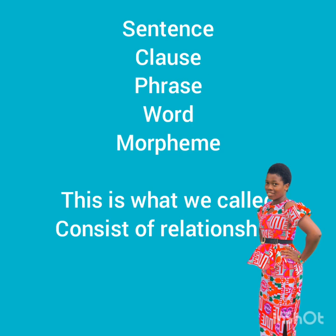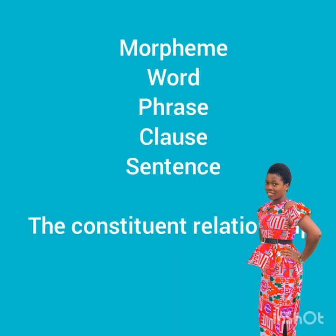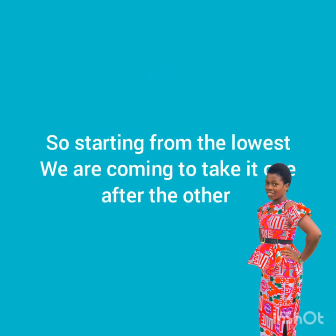These are what we call the grammatical units, starting from sentence, clause, phrase, word, and morphemes. This is what we call the constituent relations. It means that a sentence consists of clauses and others. A word consists of morphemes, a phrase consists of words, a clause consists of phrases, and a sentence consists of clauses.